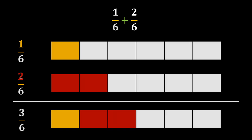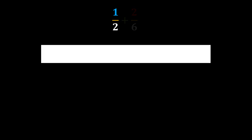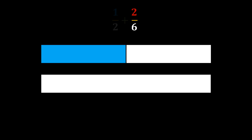Now let us change the question to the one we started the video with: 1 half plus 2 sixths. Again we follow the strategy of visualization. Starting with the first fraction 1 half, taking a fraction bar, the denominator is 2, dividing it into 2 equal pieces and shading 1 of them. Whenever you are talking about fractions, this bar represents 1 whole. So if you are taking 1 half and 2 sixths, you should be using the same sized whole — the size of the bar should not be changed. But the piece size can change depending on the denominators.